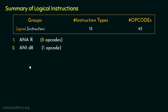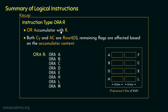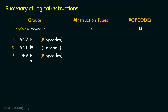The next instruction type of the logical group was ORAR, which stands for OR accumulator's content with R. Here R refers to the accumulator, all the different general purpose registers, as well as the memory element pointed by the HL register pair. The difference between ANAR and ORAR is that for OR, both the carry and auxiliary carry flags are to be reset. The remaining flags are affected based on the accumulator content after the operation. So for ORAR, we have 8 different opcodes.